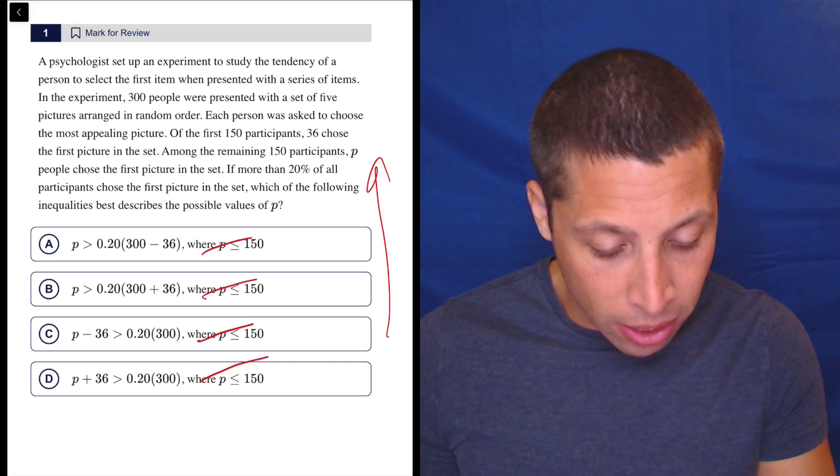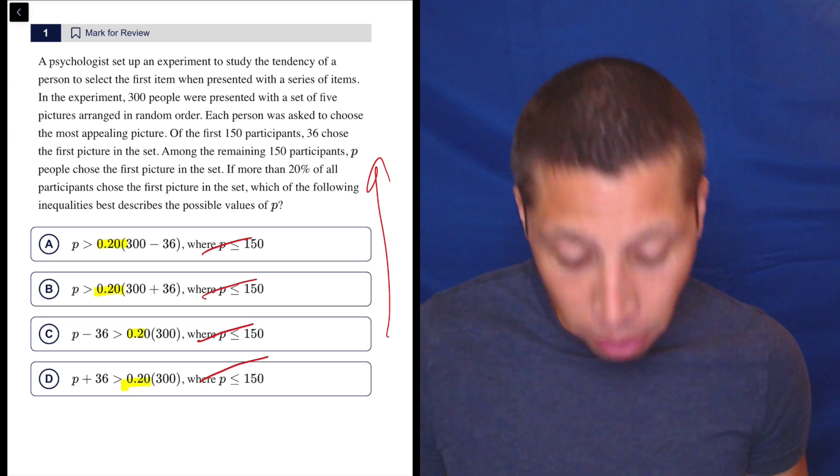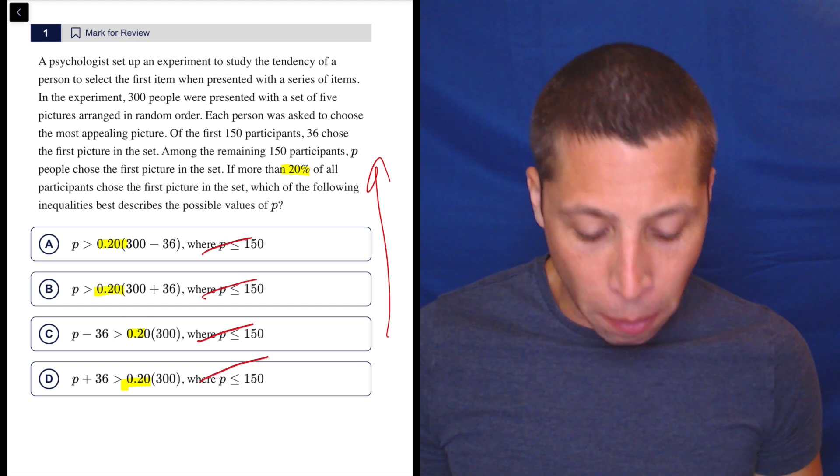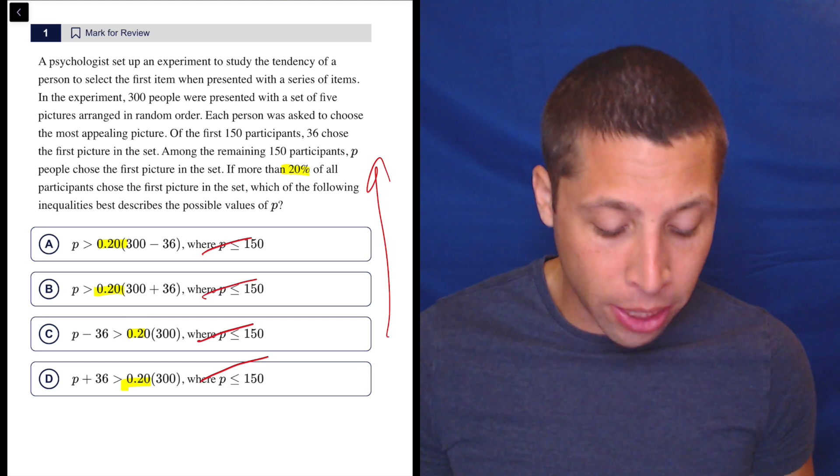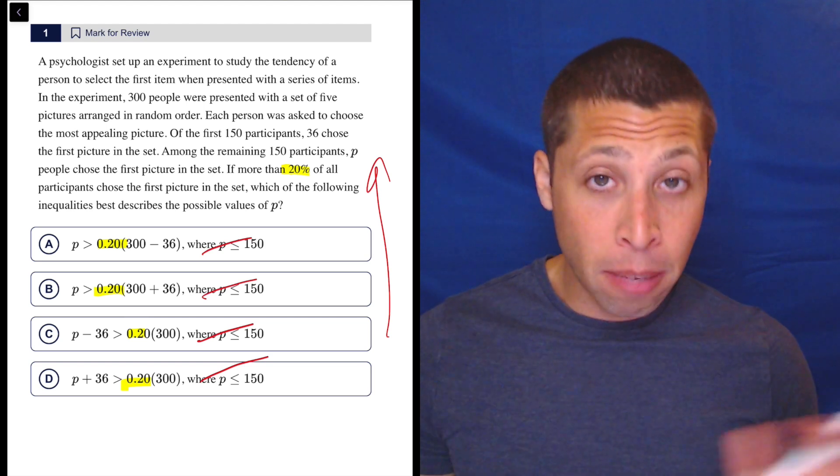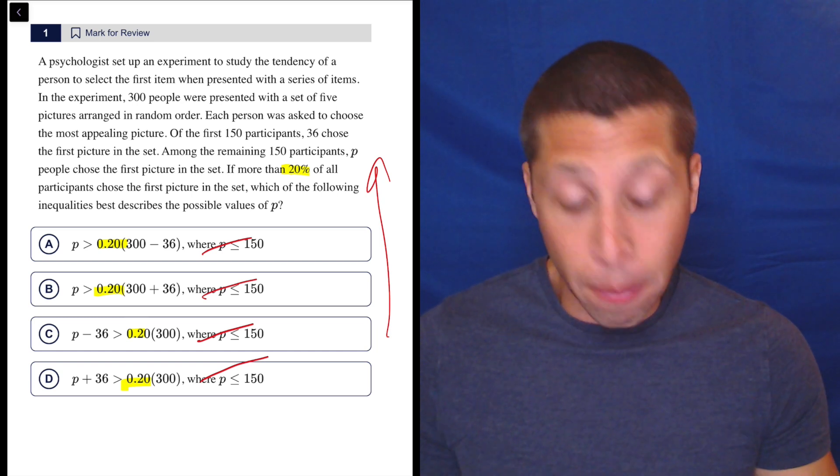The other thing I notice is it's kind of about the 20%, right? Or I can see that it's 20% because I can kind of skim, but there's 0.2, which represents 20% being multiplied either by some kind of complicated thing, 300 plus or minus 36, or 300 by itself. So that to me feels like a choice, right? We're taking 20% of something. What is the something?